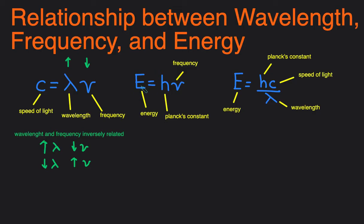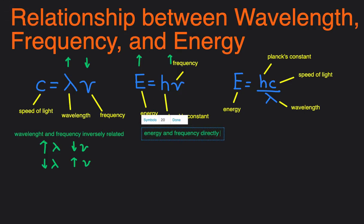Next equation: Energy equals Planck's constant times frequency. Planck's constant is a constant, so that means as the frequency goes up, the energy has to go up. Because if you have a larger number here, when you multiply it, you'll get a larger product. So we can say that energy and frequency are directly related.